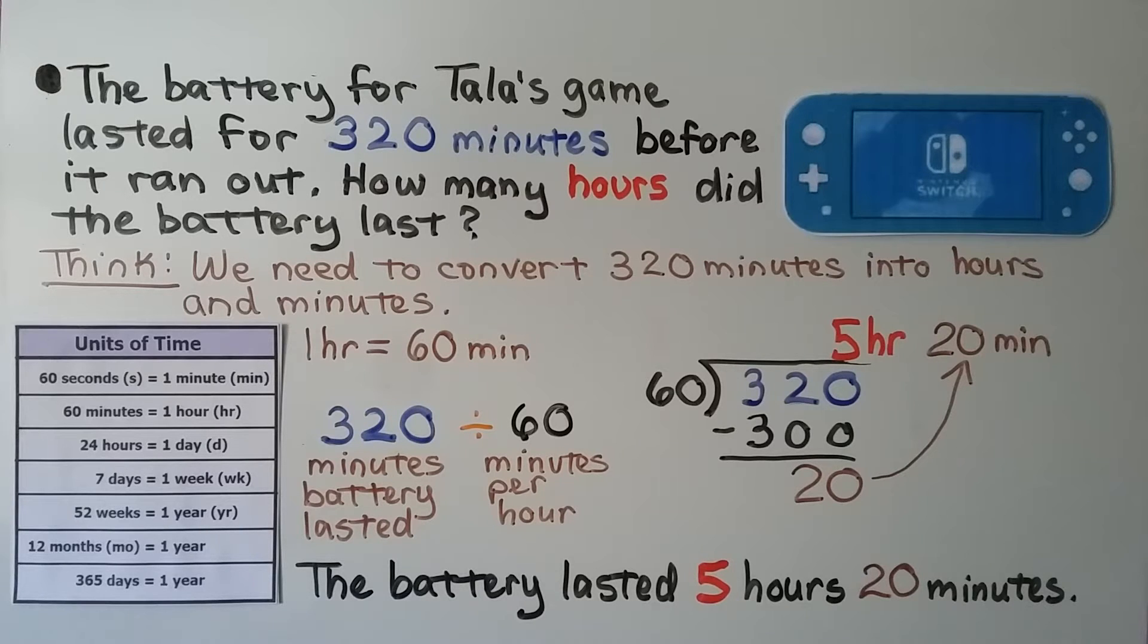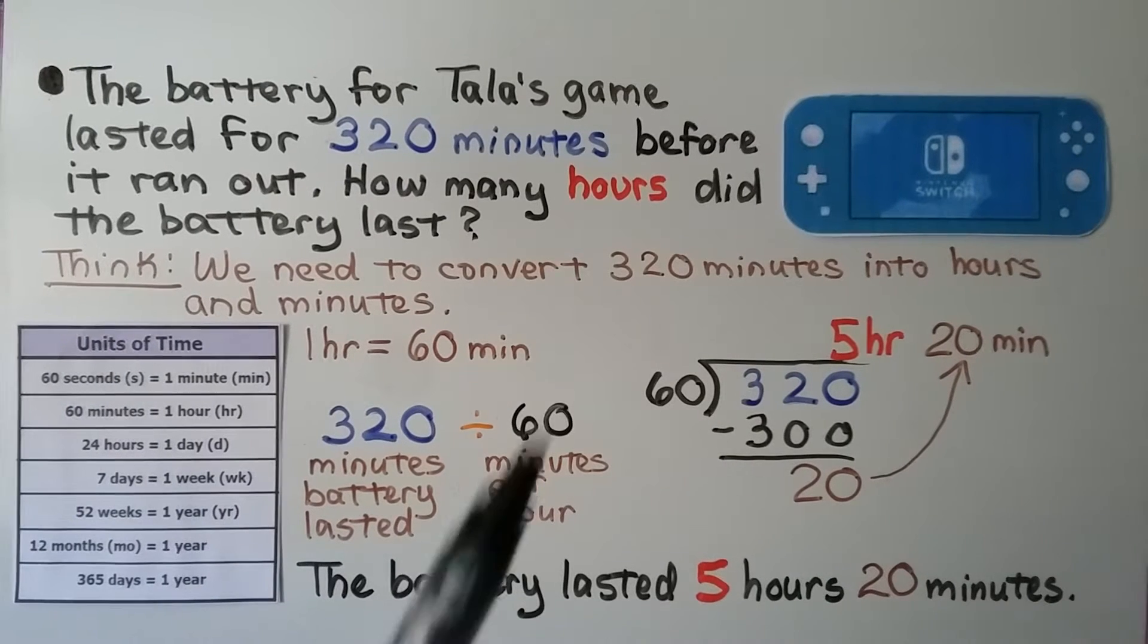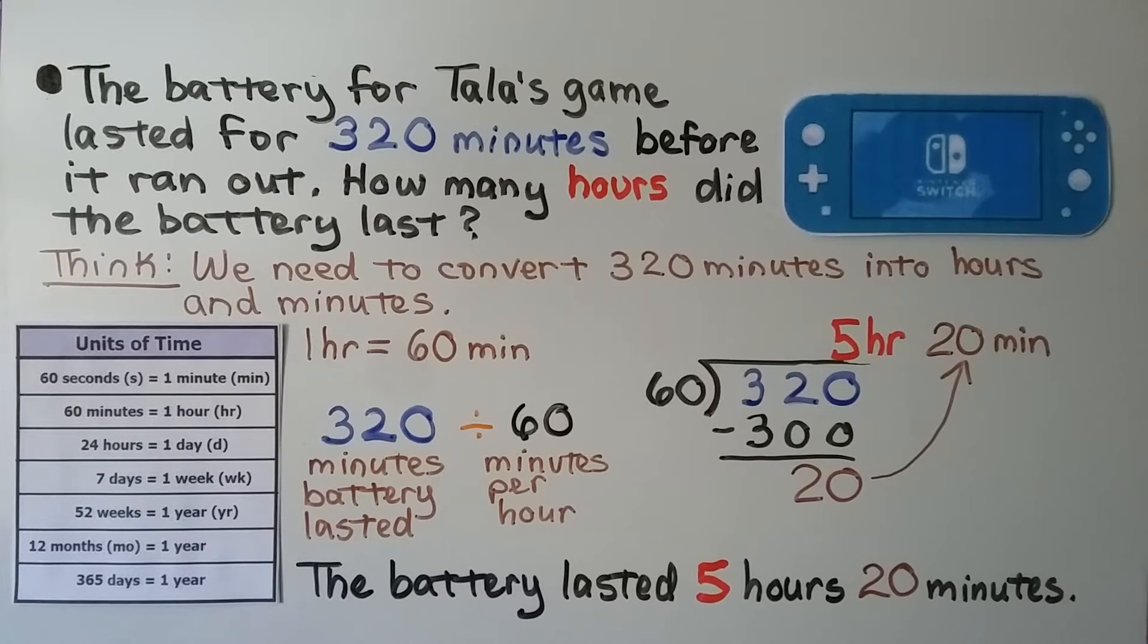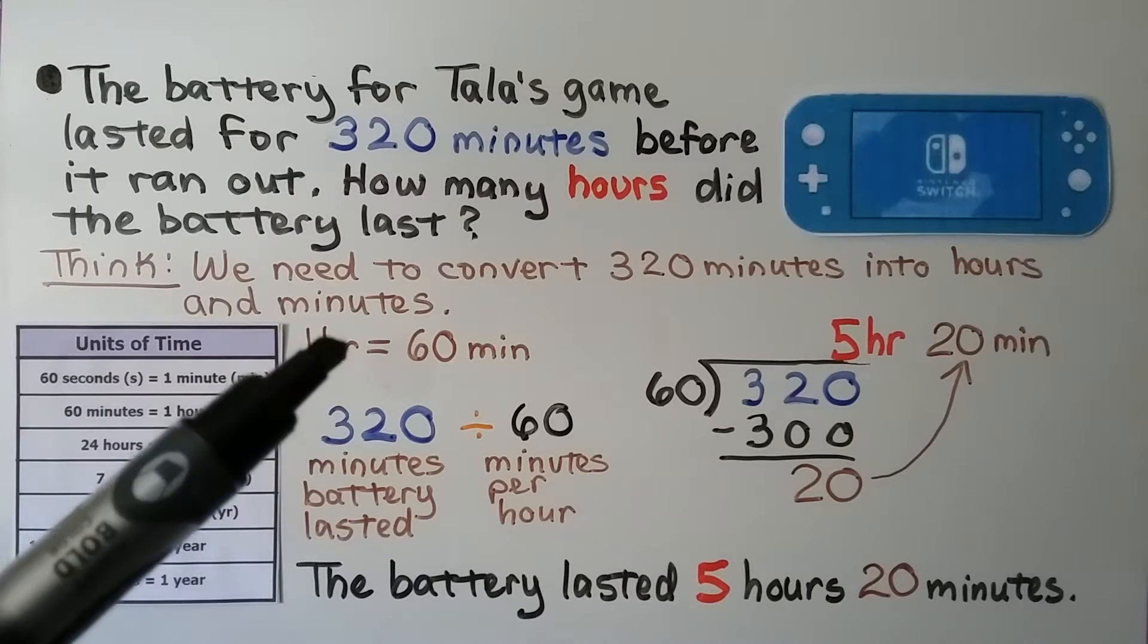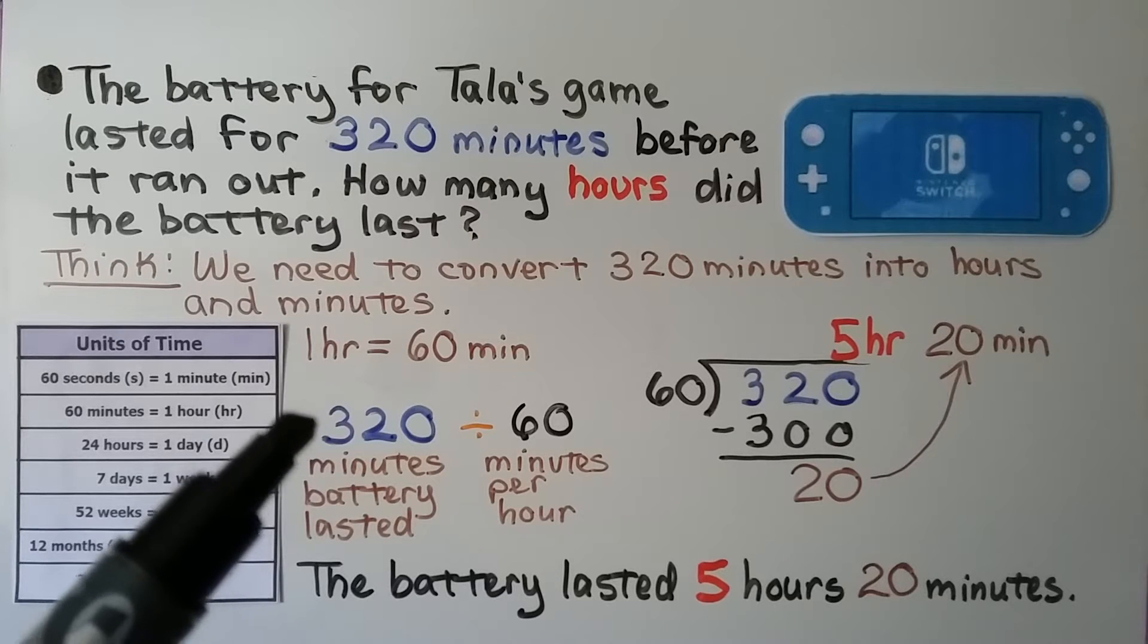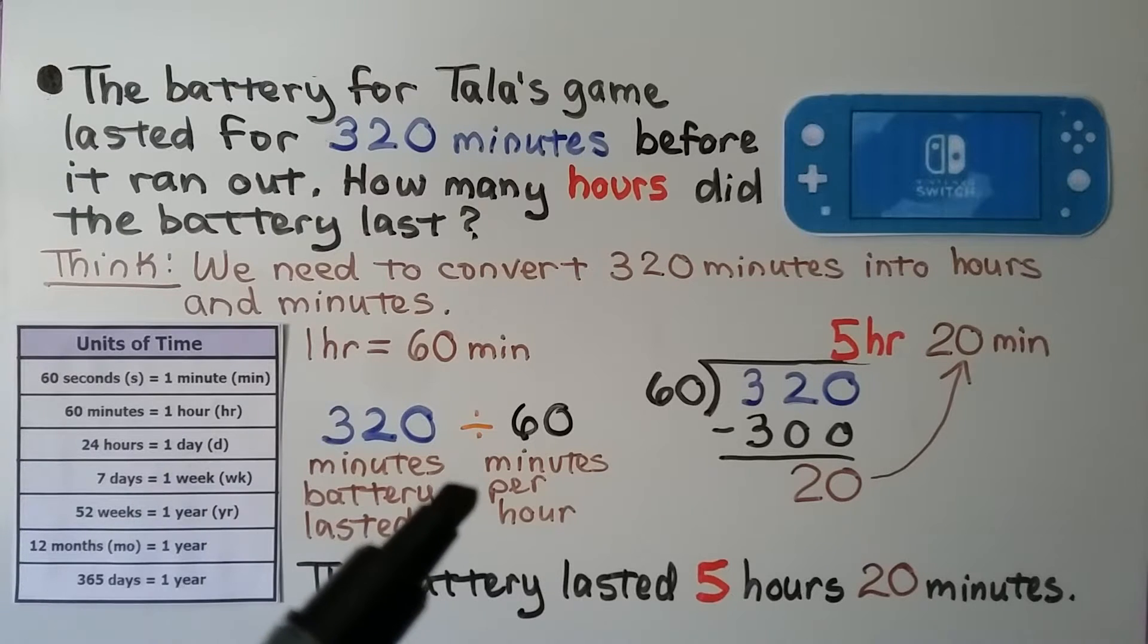So we need to convert 320 minutes into hours and minutes. There's going to be minutes left over. One hour is equal to 60 minutes. We can divide and do 320 minutes that the battery lasted by the 60 minutes per hour.